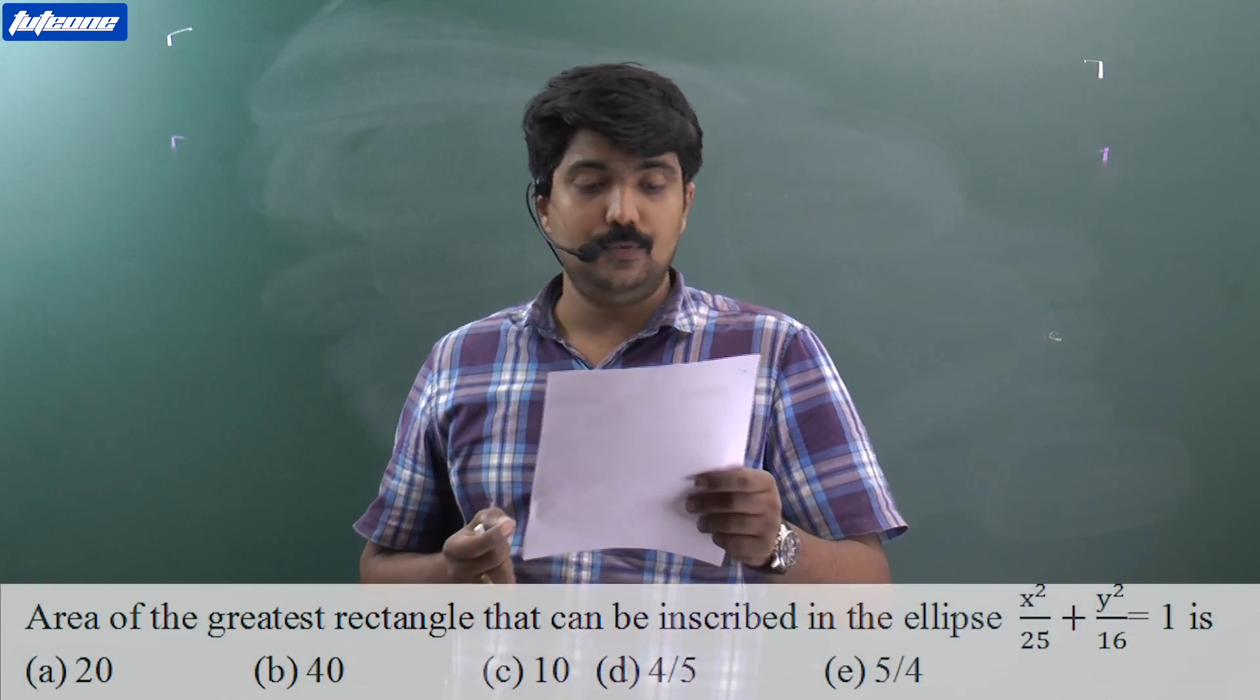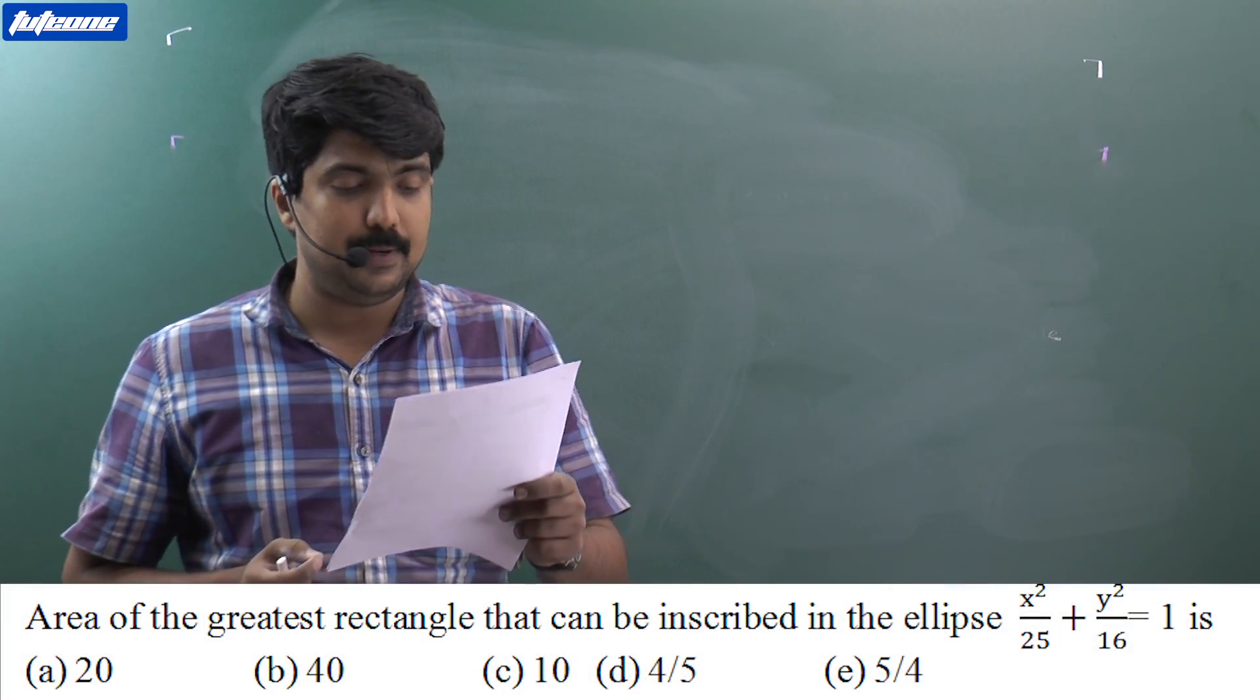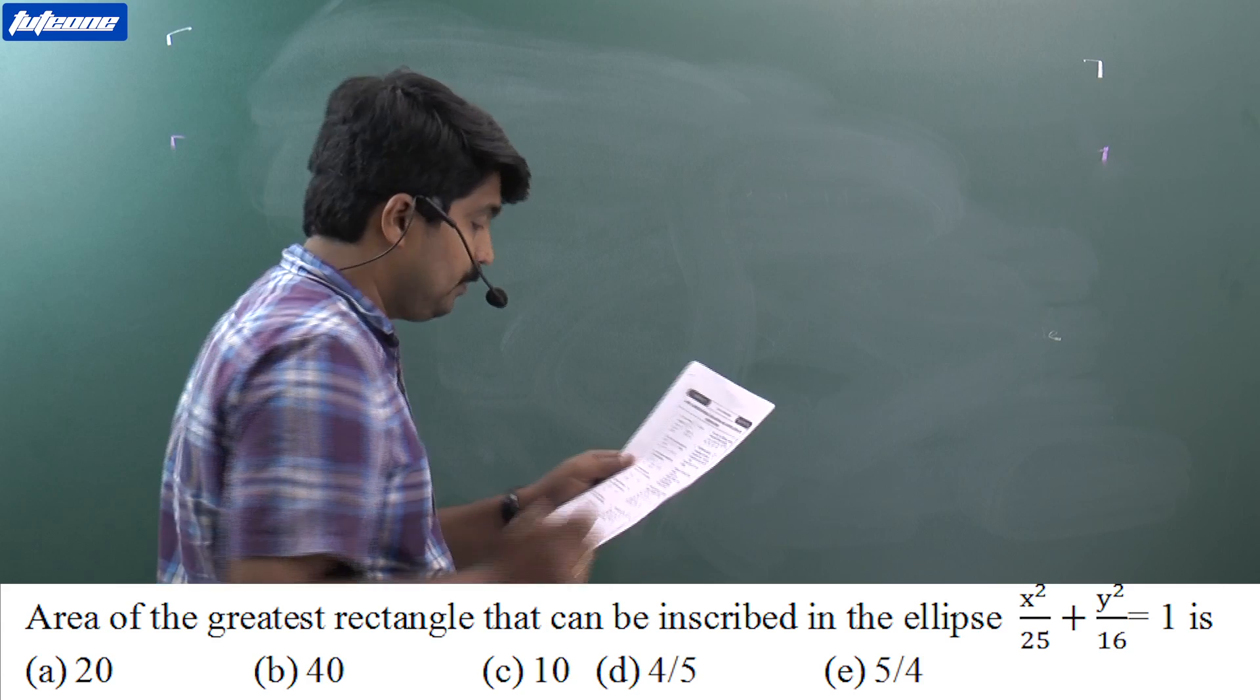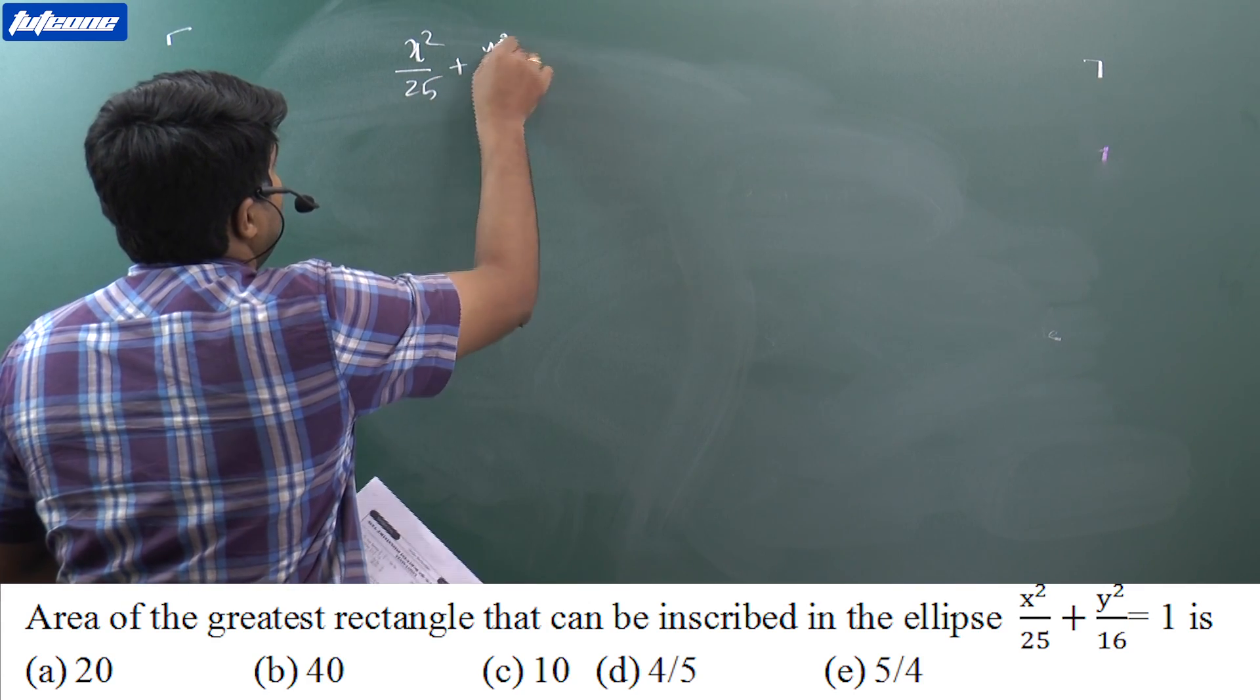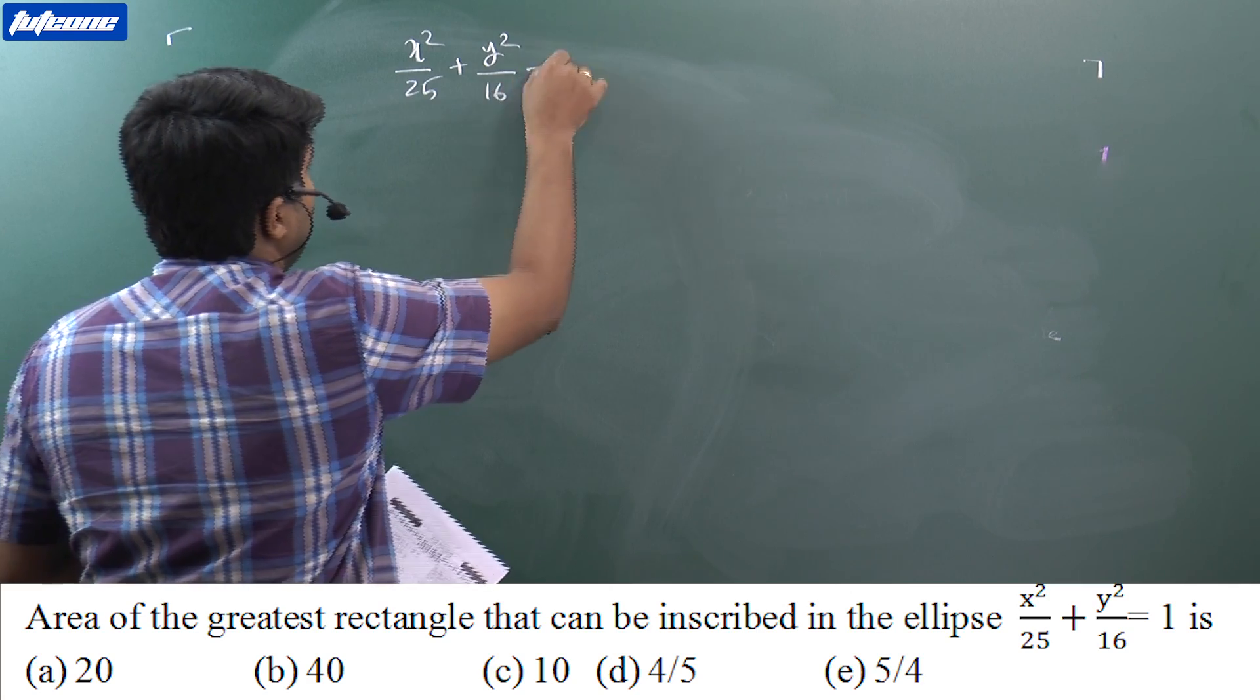Question: Area of the greatest rectangle that can be inscribed in the ellipse x² / 25 + y² / 16 = 1 is...